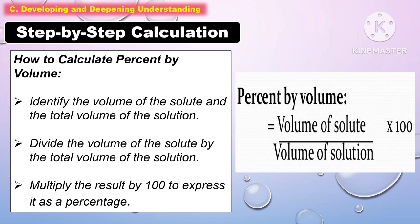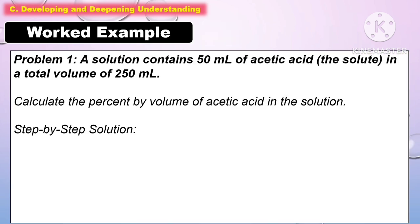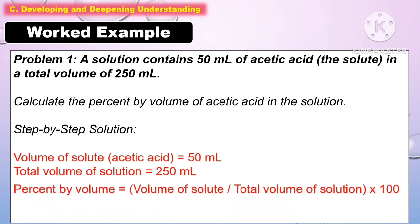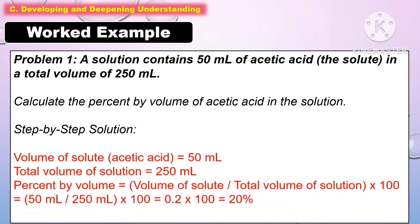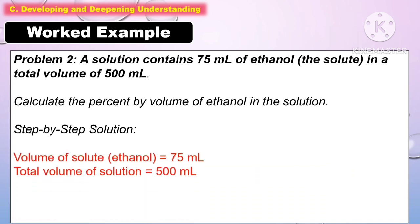To calculate percent by volume: identify the volume of the solute and the total volume of the solution, then divide the volume of the solute by the total volume of the solution, and finally multiply the result by 100 to express it as a percentage.